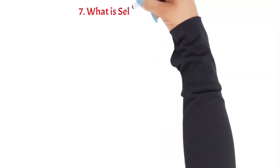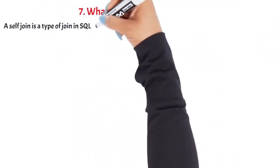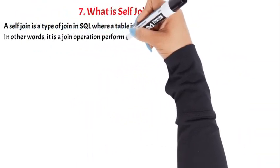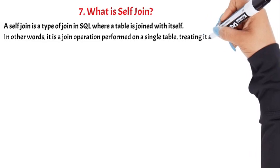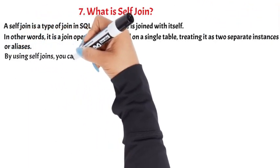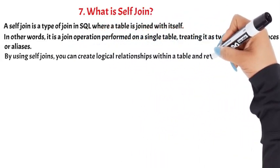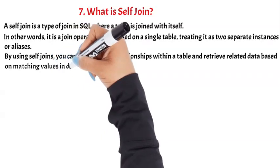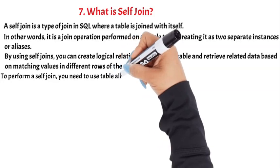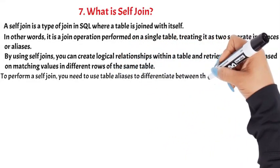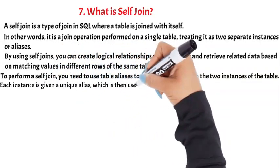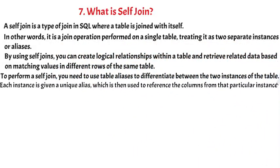Question 7: What is a self join? A self join is a type of join in SQL where a table is joined with itself. In other words, it is a join operation performed on a single table, treating it as two separate instances or aliases. By using self joins, you can create logical relationships within a table and retrieve related data based on matching values in different rows of the same table. To perform a self join, you need to use table aliases to differentiate between the two instances of the table. Each instance is given a unique alias, which is then used to reference the columns from that particular instance.